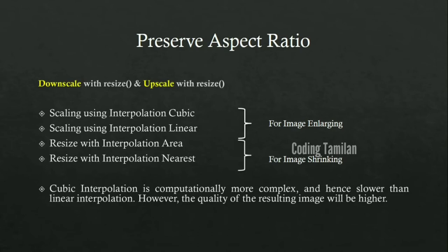As you can see, if you use each method, you can change the range for downscaling and upscaling. This is the specific area of enlarging. The cubic and linear methods look similar, as do the area and linear. The cubic interpolation is more complex when compared with linear, and there is no visible problem in the image.